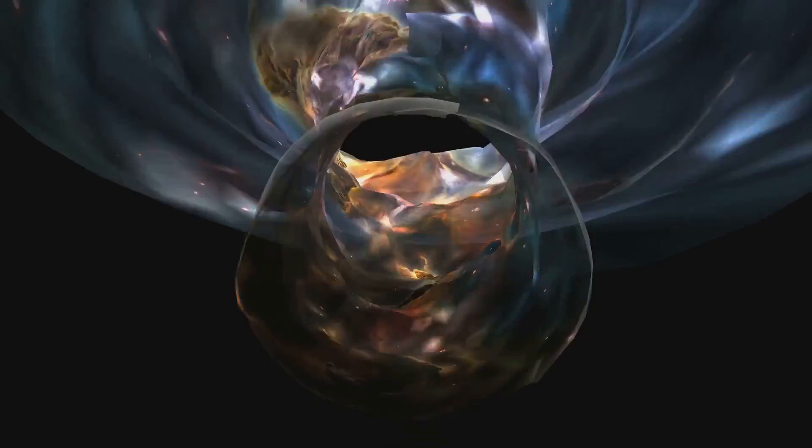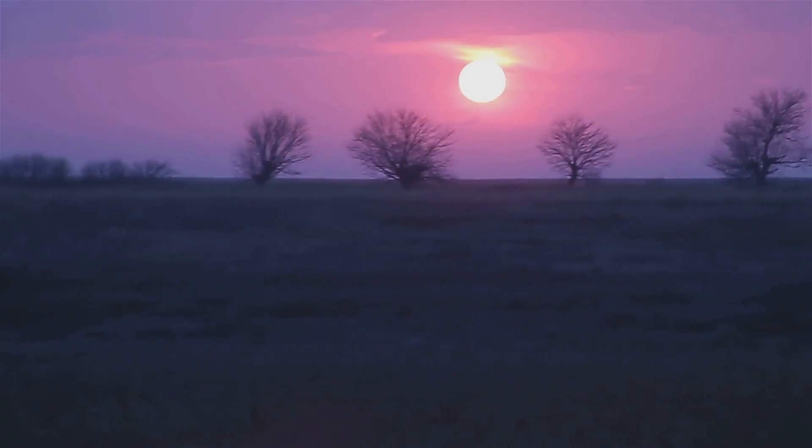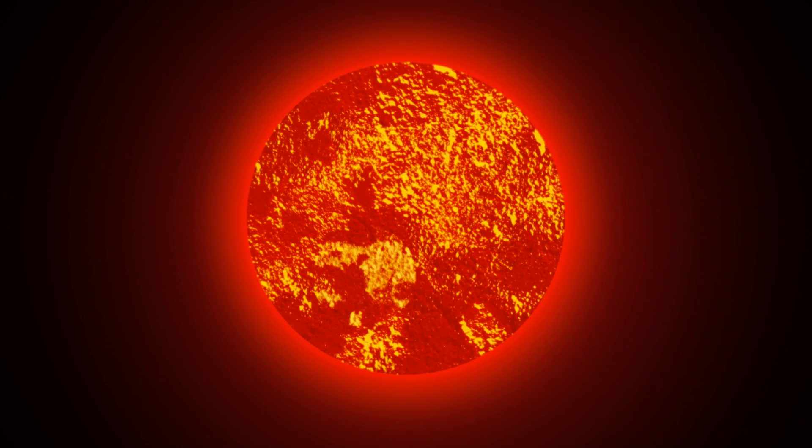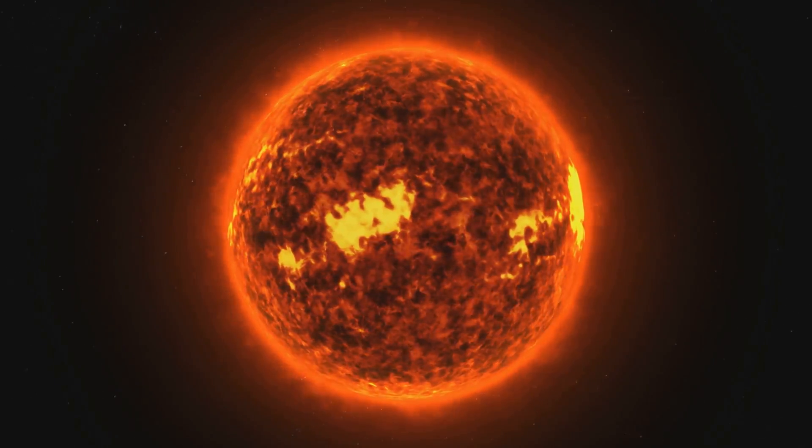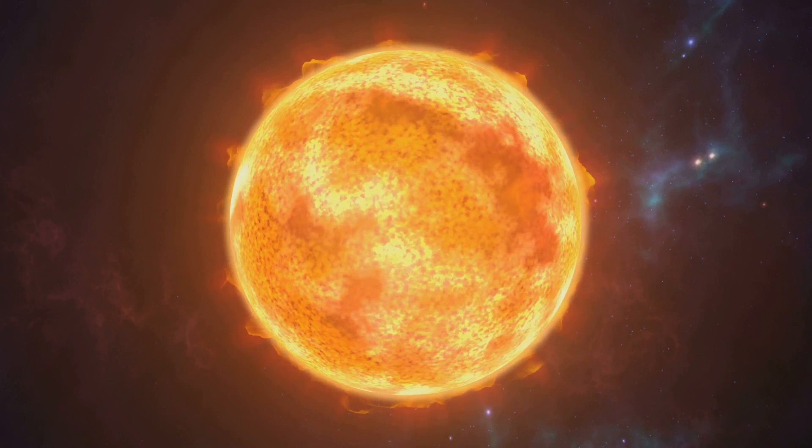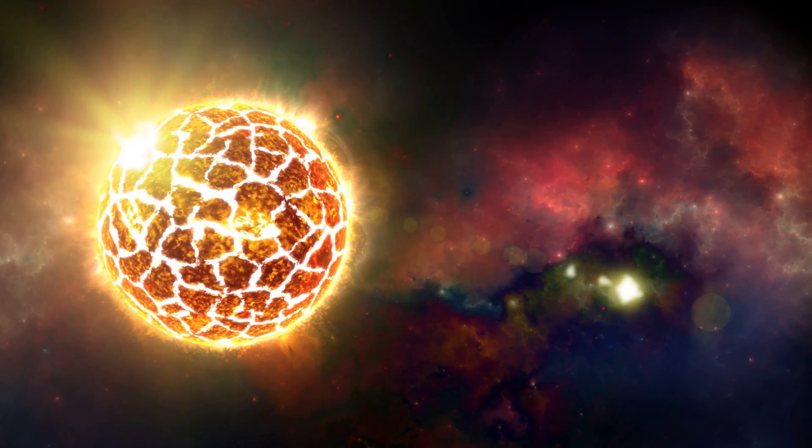The energy created in the core begins a long journey outward, bouncing from atom to atom for over 100,000 years. The light that warms your face today was born before human civilization began. By the time it reaches the sun's surface it's cooled to about 5,500 degrees Celsius. The sun is a self-regulating nuclear furnace, balanced between the outward push of fusion and the inward pull of gravity.